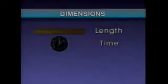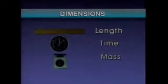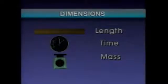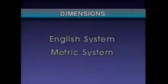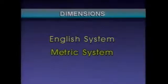Some of the physical properties that we measure are referred to as dimensions. The fundamental dimensions are length, time, and mass. These three dimensions and the units associated with them are the basis for many of the measurements that are made in a plant. Two standard unit systems that are commonly used to measure the fundamental dimensions are the English system and the metric system.